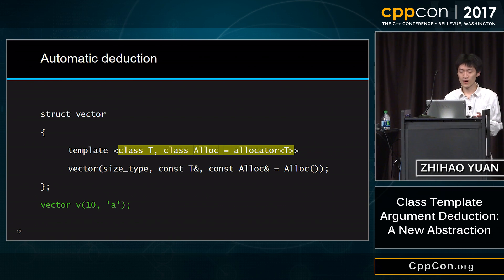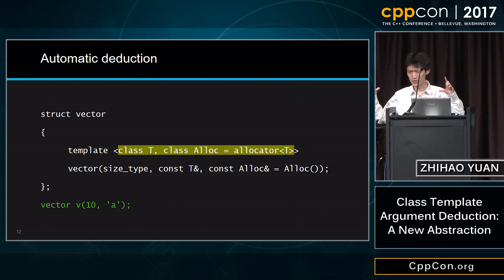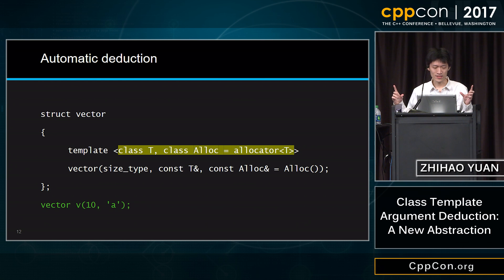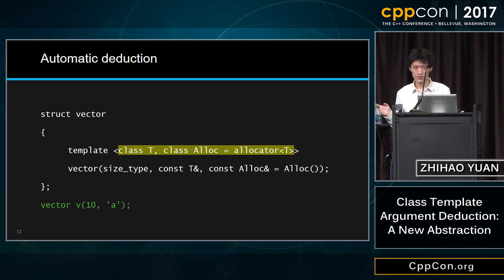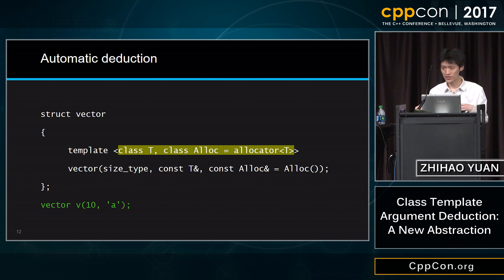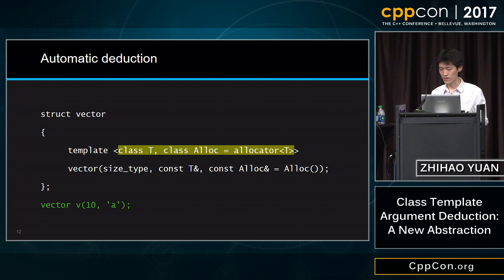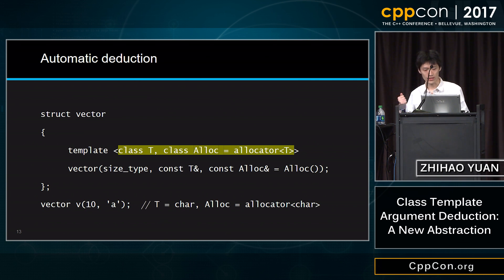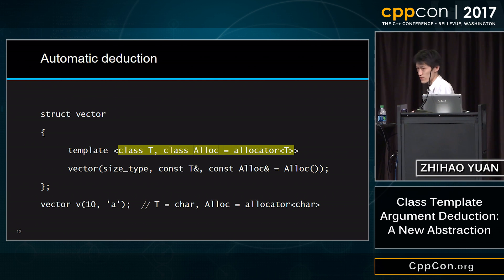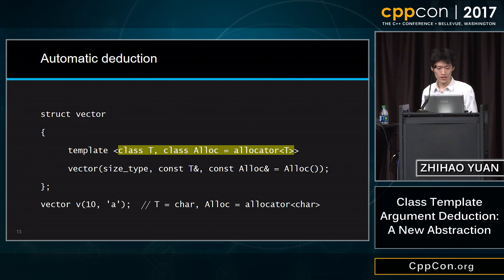The next time you run into a problem with braced initialization or aggregates in the context of class template argument deduction, just think of it this way: the compiler tries to move the original class template parameter list down to function and function templates. After that, we do the deduction, get the results for each parameter, and put those parameters back to where they came from to form the specialization — in this case, `vector<char, allocator<char>>`. So we got our first rule for automatic deduction: one part of the deduction candidates comes from the constructors with a compiler-synthesized template parameter list.